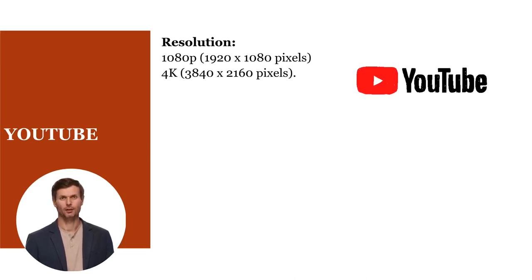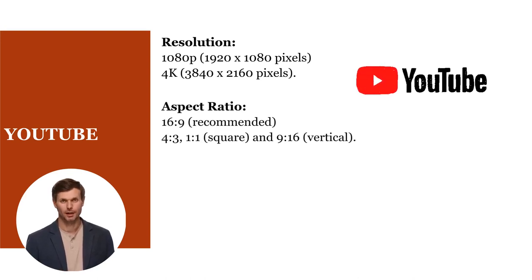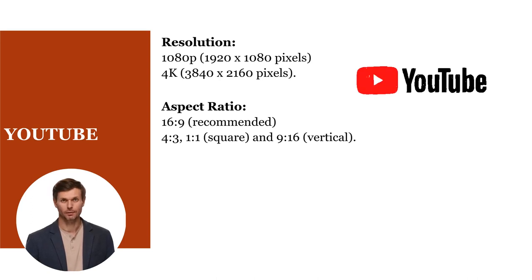Common resolutions include 1080p (1920 by 1080 pixels) and 4K (3840 by 2160 pixels). The recommended aspect ratio for YouTube videos is 16:9, the standard widescreen format used for most video content. However, YouTube also supports other aspect ratios including 4:3.